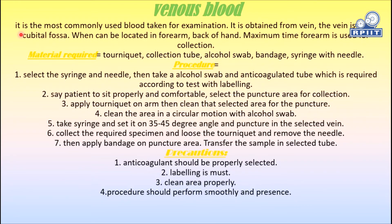Venous blood is the most commonly used blood taken for examination. It is obtained from the antecubital fossa vein, located at the back of the arm. The forearm is most commonly used for collection. Materials required include a tourniquet, collection tube, alcohol swab, bandage, syringe, and needle. The tubes must be properly labeled with anticoagulants selected according to the test.